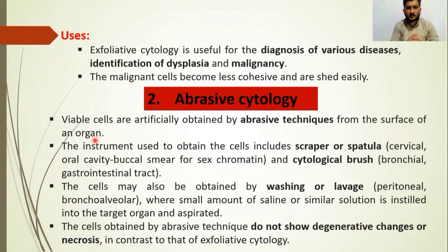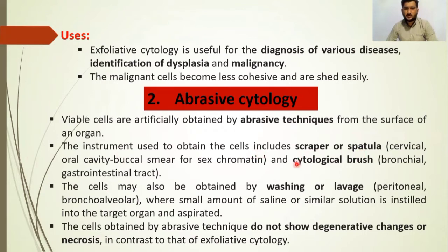In abrasive cytology, different instruments are used to collect the samples, like a scraper or spatula and cytological brush. Other techniques also used to get the sample include washing or lavage — in this method, normal saline or a similar solution is instilled into the target organ and aspirated. The cells obtained by abrasive technique do not show degenerative changes or necrosis, in contrast to exfoliative cytology.